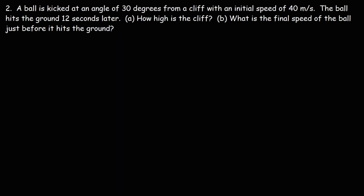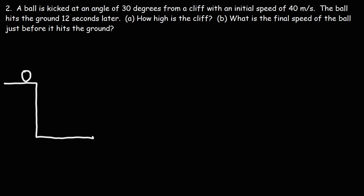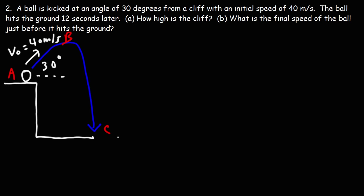Now let's move on to number two. A ball is kicked at an angle of 30 degrees from a cliff with an initial speed of 40 meters per second. The ball hits the ground 12 seconds later. How high is the cliff? Let's draw a picture: the ball is kicked from the cliff, goes up, then back down. We label points A, B, and C. The launch angle is 30 degrees, the initial speed is 40 meters per second, and the time to reach point C is 12 seconds.